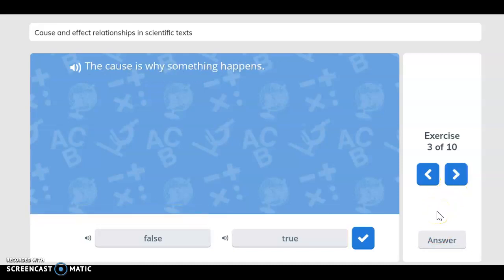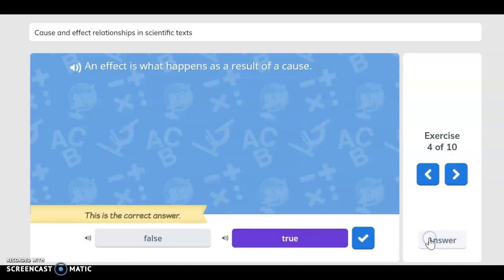The cause is why something happens. If you said true, you are correct. An effect is what happens as a result of a cause. If you said true, you are correct.